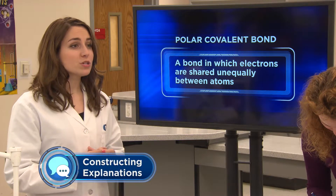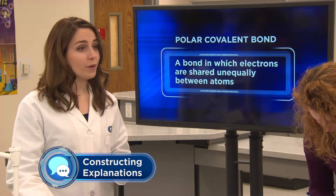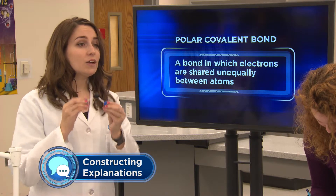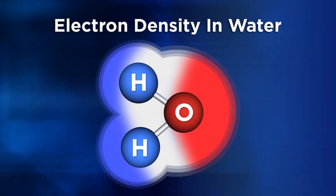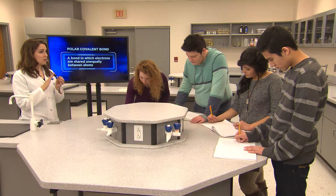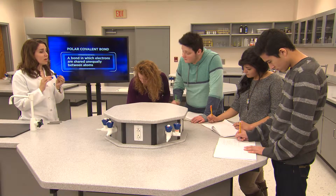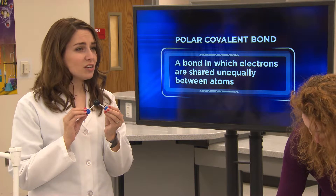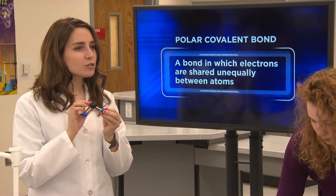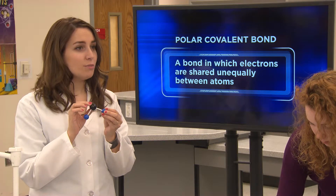The compound you're most familiar with that has polar covalent bonds is water. In a water molecule, the electrons that are being shared between the hydrogen atoms and the oxygen atoms are being shared unequally. The oxygen has the greater electronegativity, so it tends to keep the electrons near itself. Since the electrons tend to stay near the oxygen more than they do the hydrogen, we say the oxygen end of the molecule develops a partially negative charge.